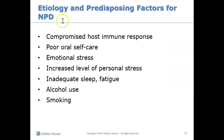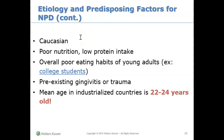What causes necrotizing periodontal disease? You could have a poor host immune response. This can happen due to stress — like those soldiers in World War I who experienced severe emotional stress. It can even happen to college or university students going through a lot of stress. Alcohol and smoking also play a big role. It's typically seen in Caucasian people with poor nutrition or poor eating habits, and the age range most commonly affected is 22 to 24 years old.